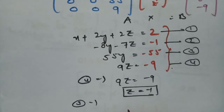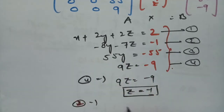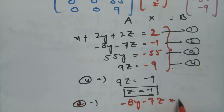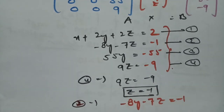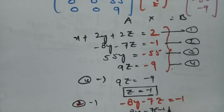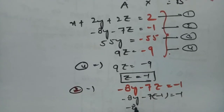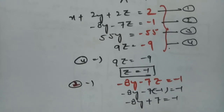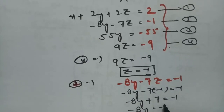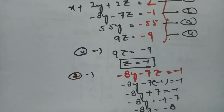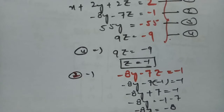Substituting z equals minus 1 into equation 2: minus 8y minus 7 times minus 1 equals minus 1, so minus 8y plus 7 equals minus 1, giving minus 8y equals minus 1 minus 7, so minus 8y equals minus 8, and therefore y equals 1.